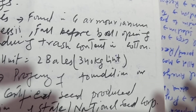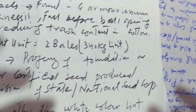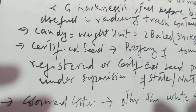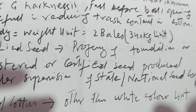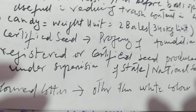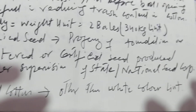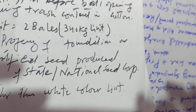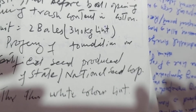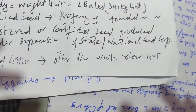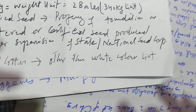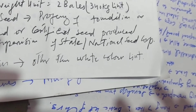Candy is a weight unit; two bales is equal to 340 kg. Certified seed is the progeny of foundation or registered seed produced under supervision of the state or national seed corporation. Colored cotton is cotton having a color other than white.